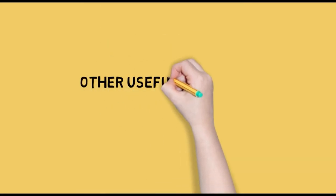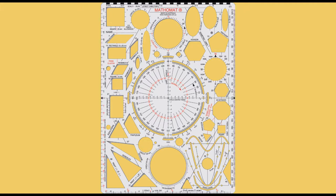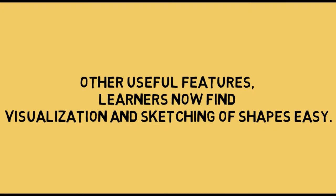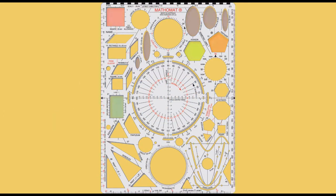Other useful features. The MathoMatte drawing template contains other useful shapes. Learners now find visualization and sketching of shapes easy. Figures 4, 5, 6, 8, and 17 are ellipses. Figure 9, hexagon. Figure 10, pentagon. Figure 1, square. Figure 21, golden rectangle. The learner can now easily sketch parallel lines, isometric lines, and center lines. Filling holes on the right side of template for ring binders.